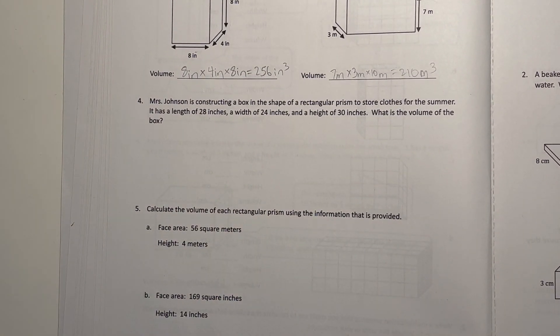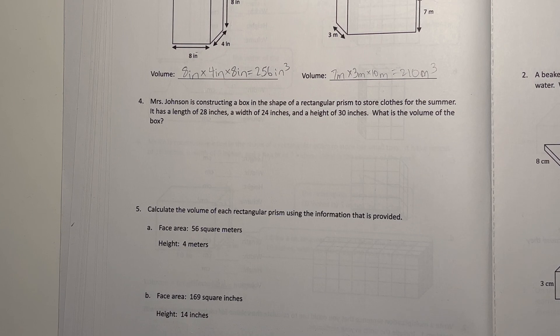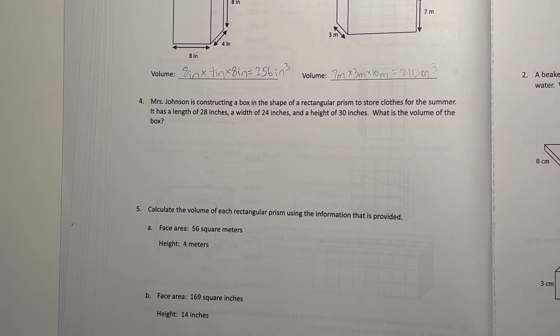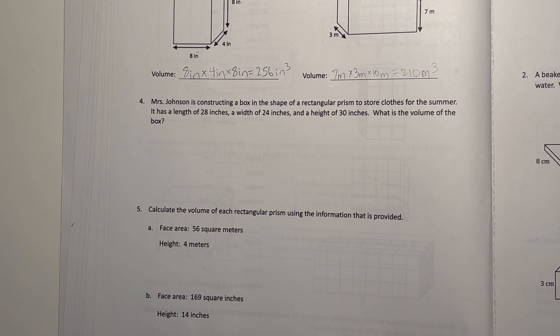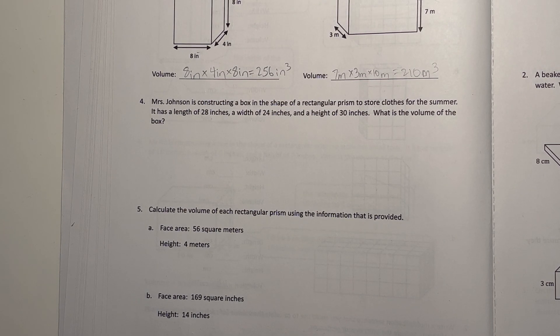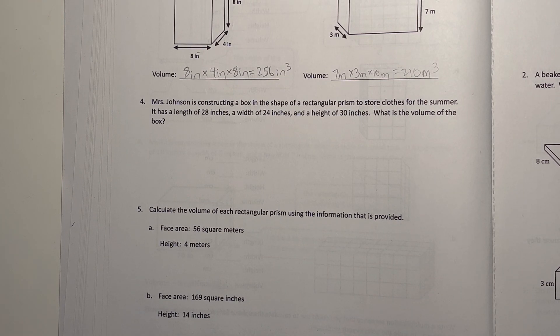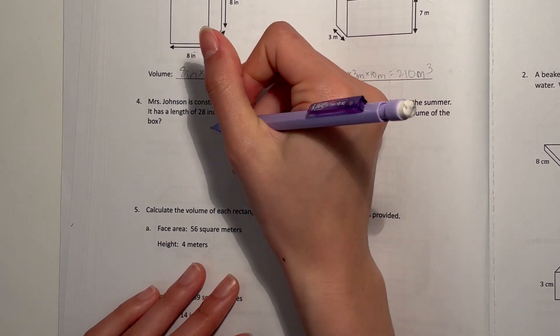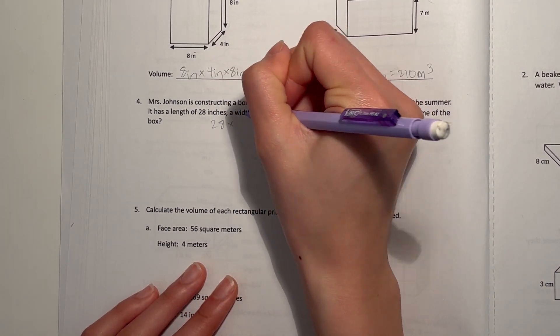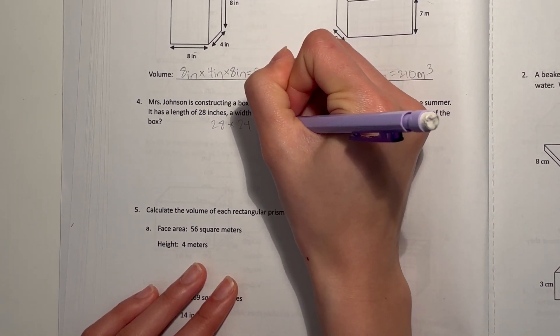Number four: Mrs. Johnson is constructing a box in the shape of a rectangular prism to store clothes for the summer. It has a length of 28 inches, a width of 24, and a height of 30. What's the volume of the box? So length times width times height.